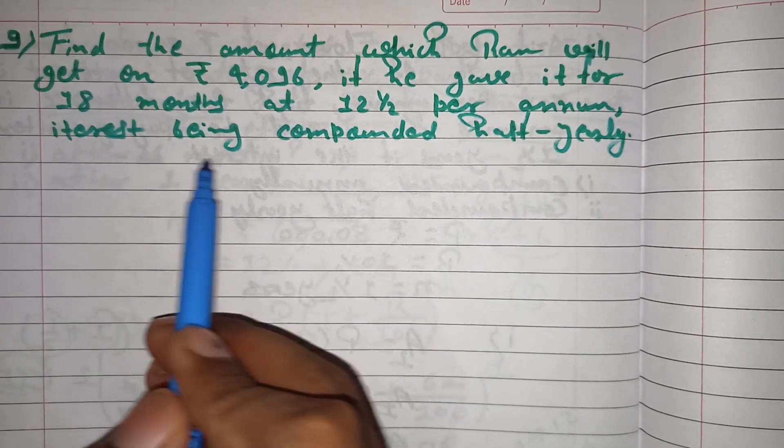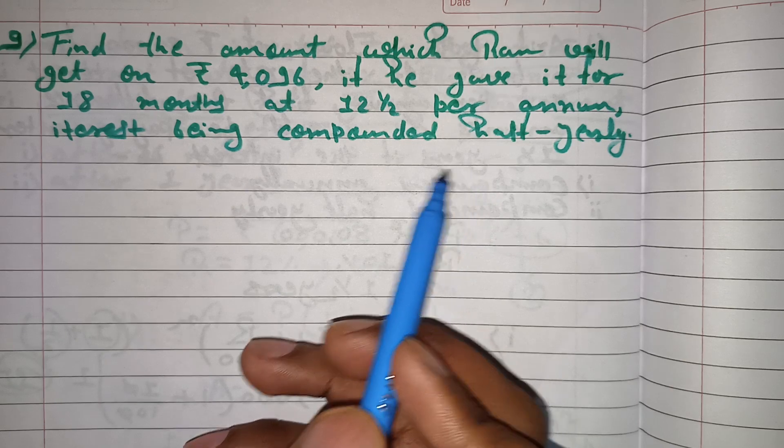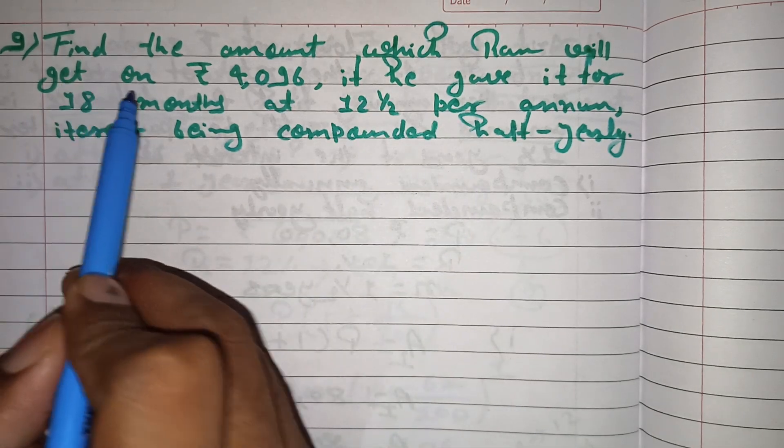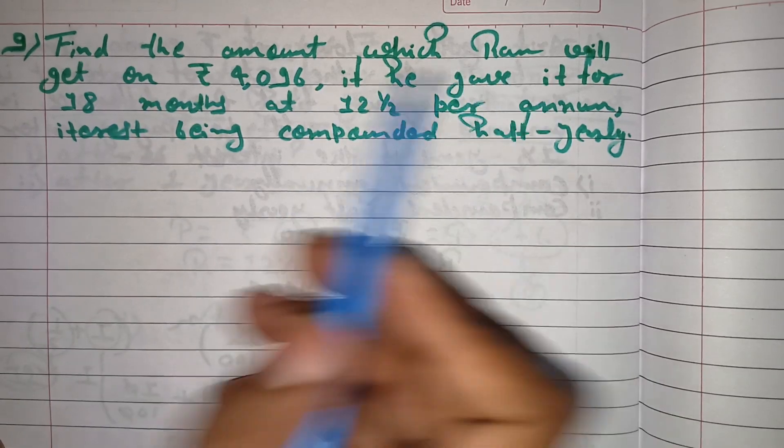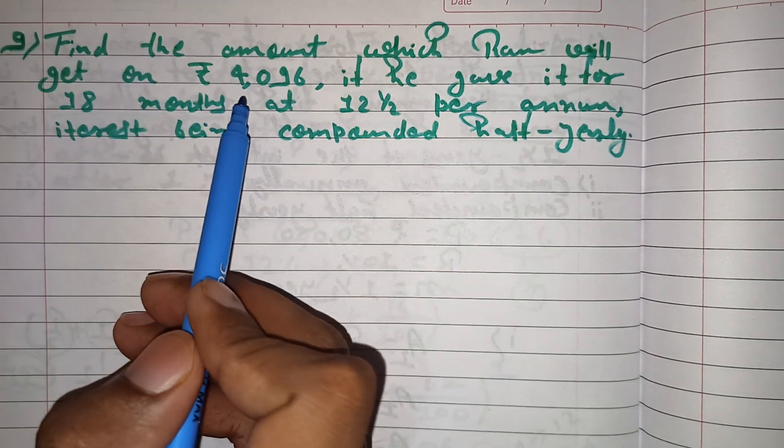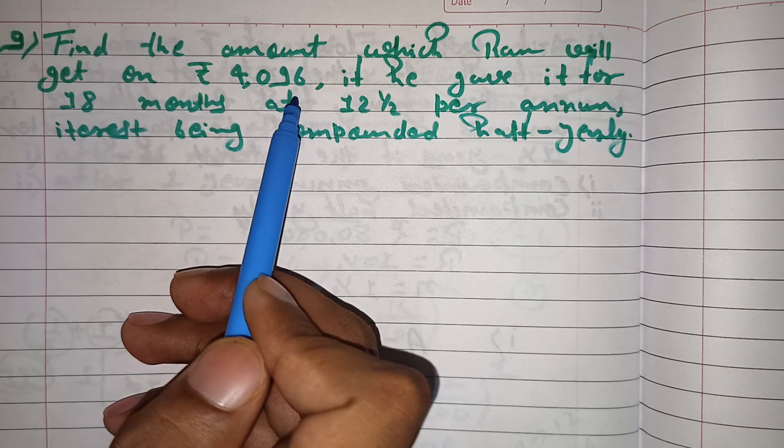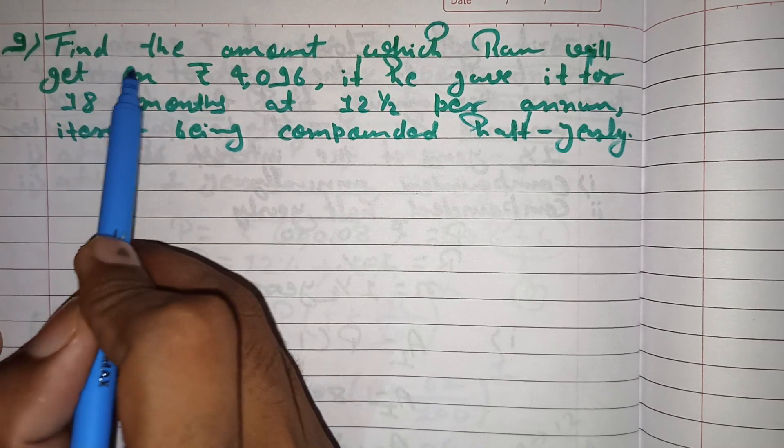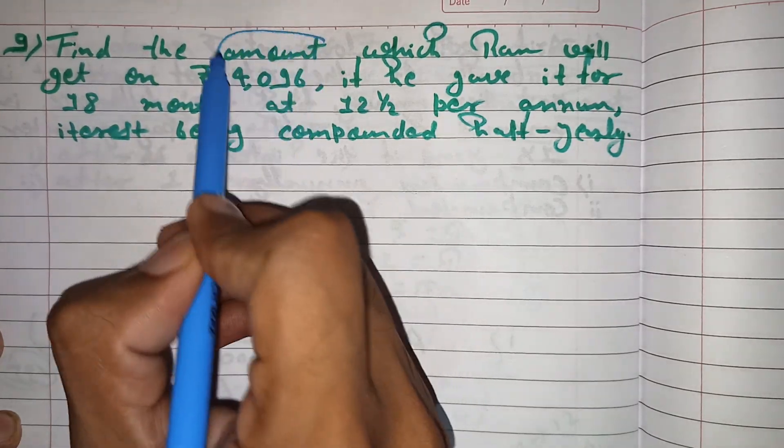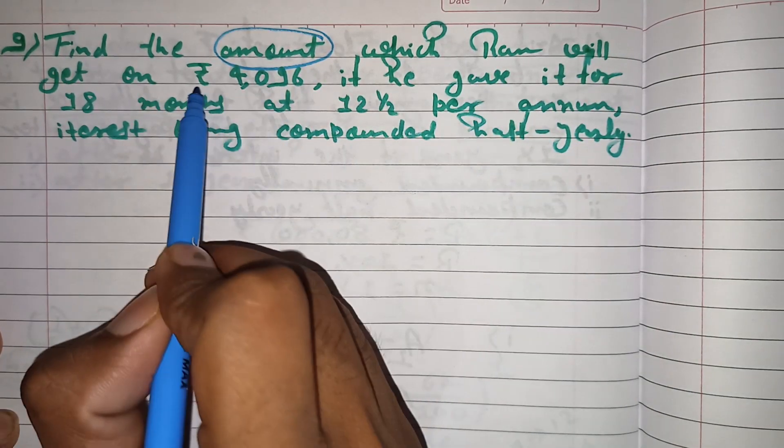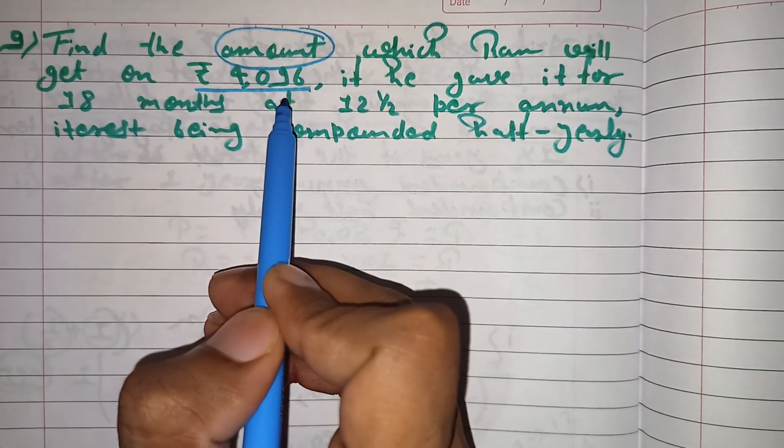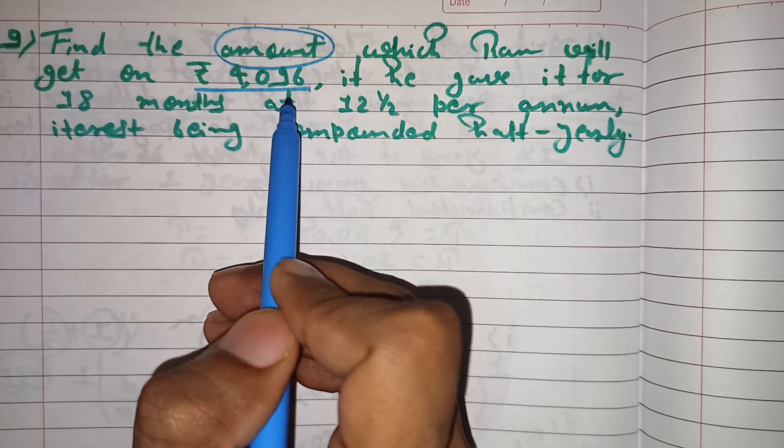Interest being compounded half yearly. The question asks what is the amount which Ram will get on 4096. So we have to find the amount which Ram will get.